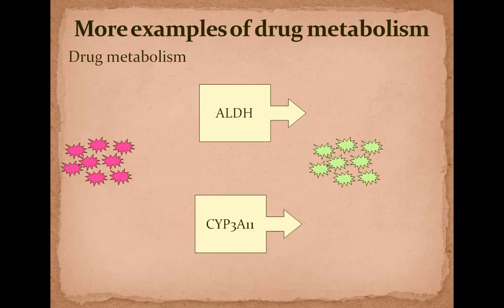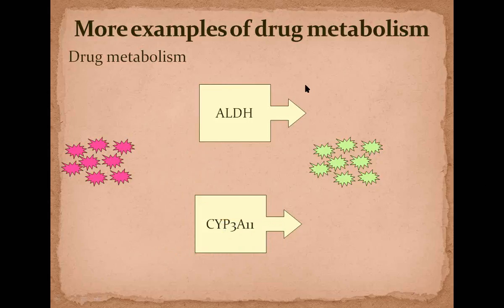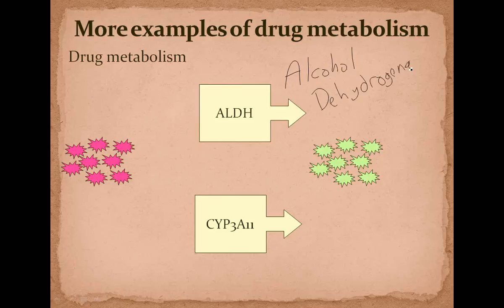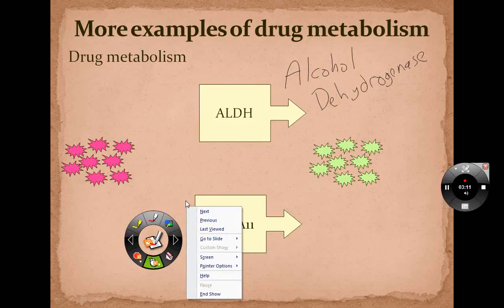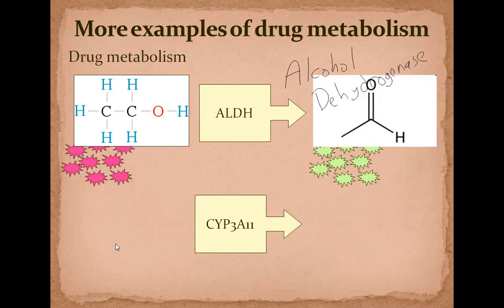An example of metabolism: here you have ALDH. Does anyone remember what ALDH is for? Alcohol Dehydrogenase. Alcohol Dehydrogenase breaks down alcohol by removing hydrogen. For example, you have ethanol here — this is the alcohol that people drink to get drunk. Ethanol gets turned into formaldehyde, broken down by Alcohol Dehydrogenase.